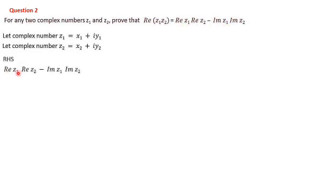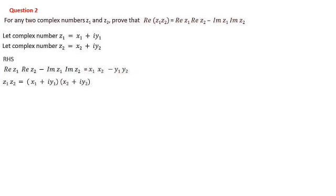Let z1 = x1 + iy1 and z2 = x2 + iy2. Then Re(z1) = x1, Im(z1) = y1, Re(z2) = x2, Im(z2) = y2. The RHS is Re(z1)·Re(z2) - Im(z1)·Im(z2) = x1·x2 - y1·y2. Now for the LHS, z1·z2 = (x1 + iy1)(x2 + iy2).